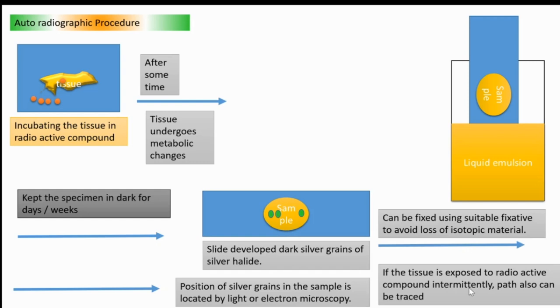And if we expose the tissue intermittently with that radioactive substance. Intermittently means on and off with a fixed regular interval. With fixed regular interval, if we expose the tissue with the radioactive isotope, then we can trace the path also. This is the condition. This is up to here is the entire process. In this box, it is mentioning about another possibility. Possibility means with the first beginning situation.